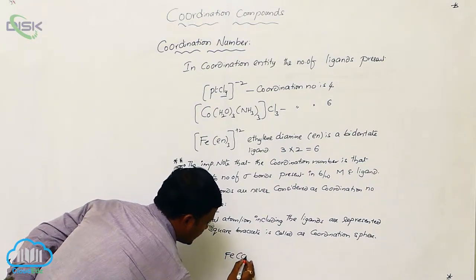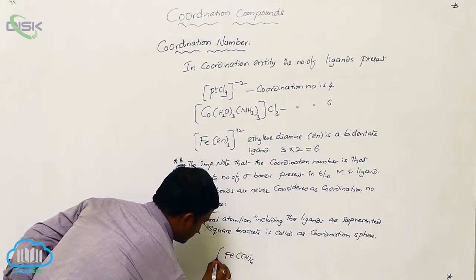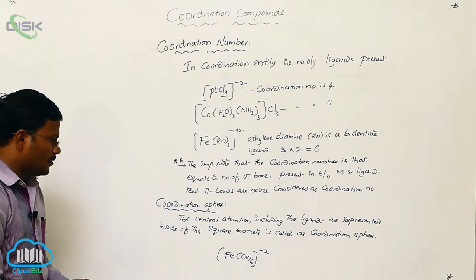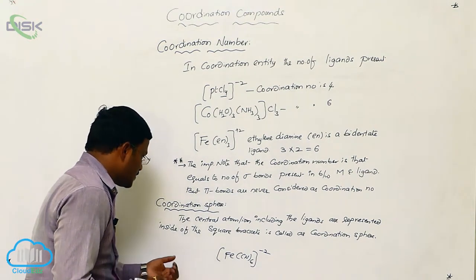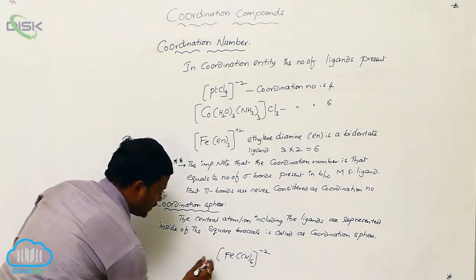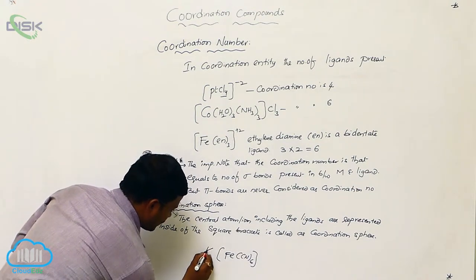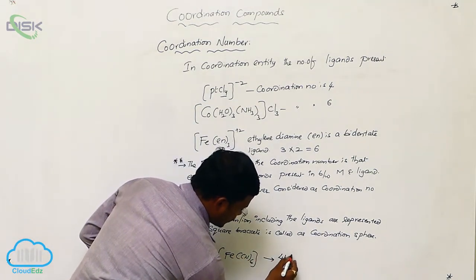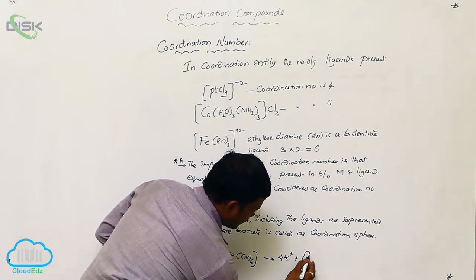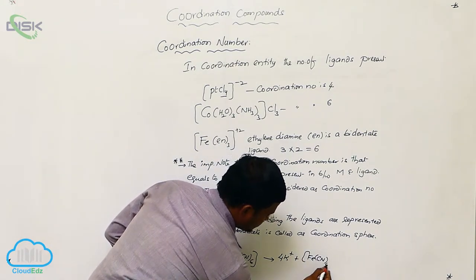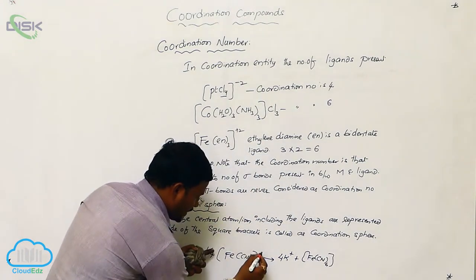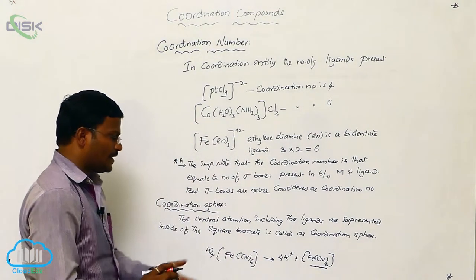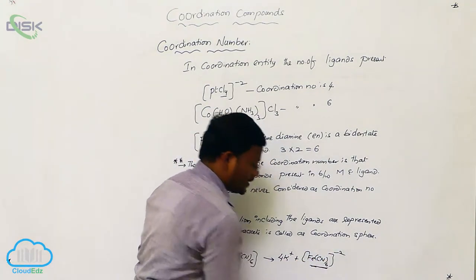Here, coordination sphere means when K₄[Fe(CN)₆] dissociates, it produces 4K⁺ plus [Fe(CN)₆]⁴⁻. The area shown inside the square bracket is called the coordination sphere. So the [Fe(CN)₆] part is considered as the coordination sphere.